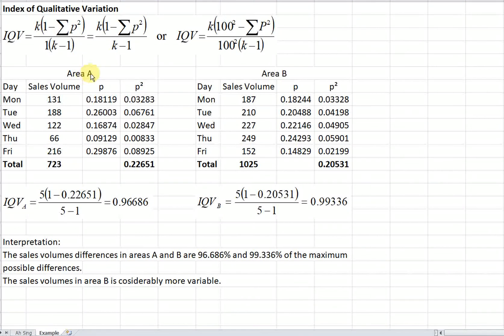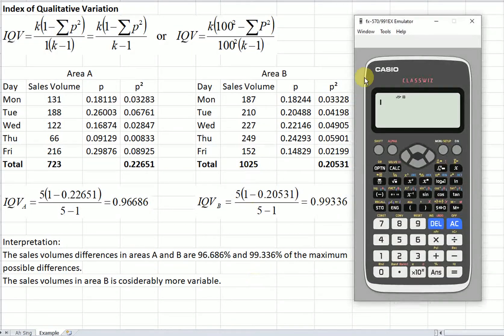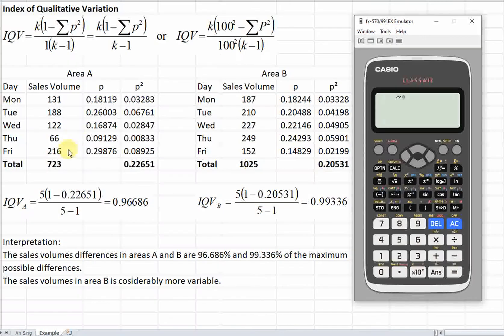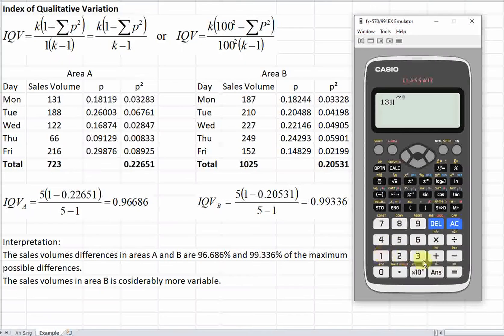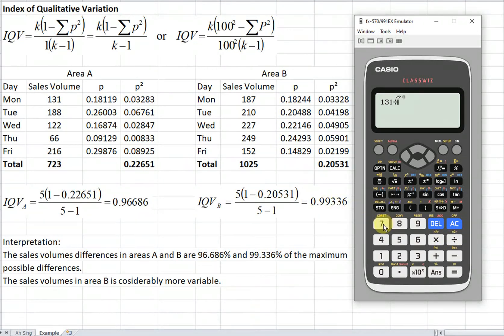What we want to do is check the variation. We compare the variation between the two areas. Based on the calculation, what we have to do here is first, obtain the proportion for each category, meaning the number of occurrences for each category. So for example, first we have to total everything. When we total the sales volume, we should get this value. What we have to do for Monday to check the proportion, then we take 131 divided by the total, which is 723.